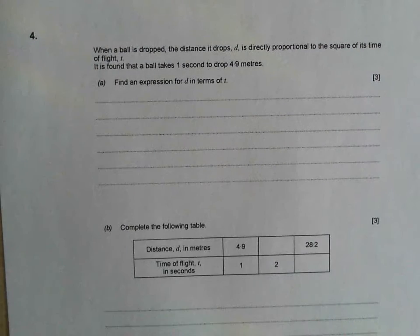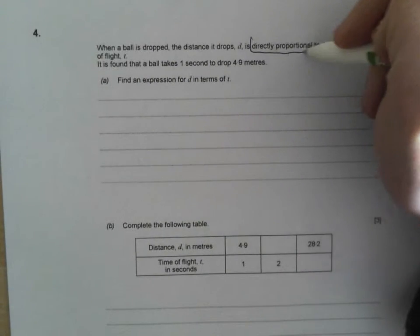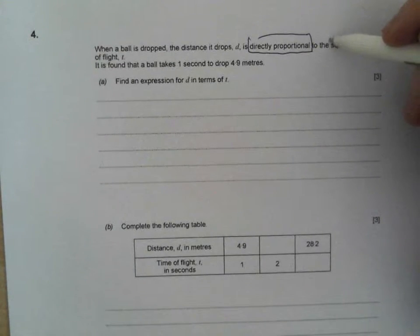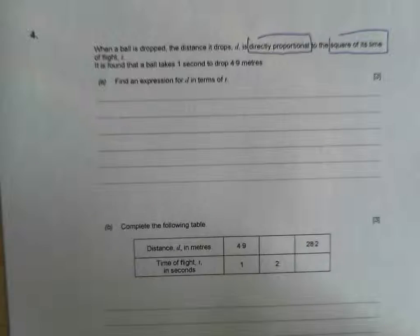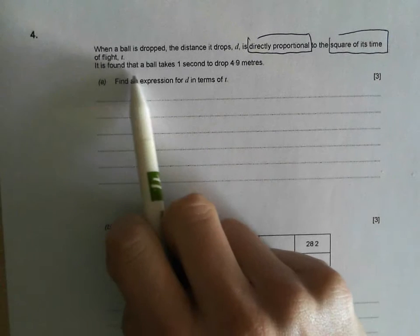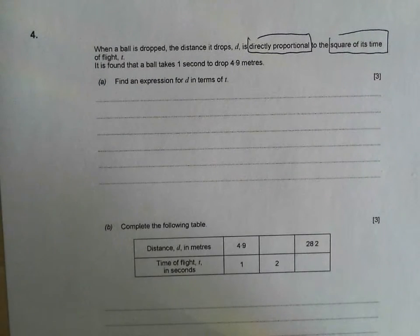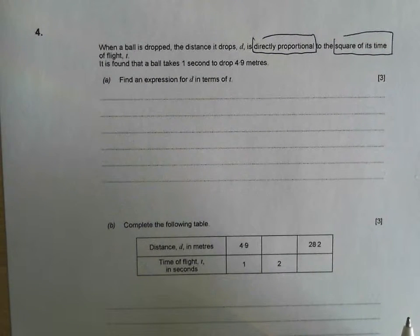When a ball is dropped, the distance it drops d is directly proportional, that's going to be important, to the square of its time. Find an expression. Oh sorry, it is found that a ball takes 1 second to drop 4.9 meters. Find an expression of d in terms of t.